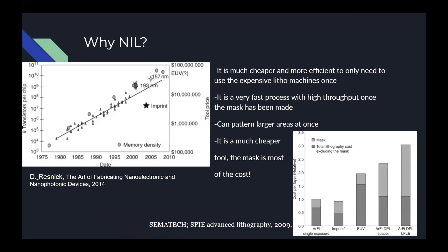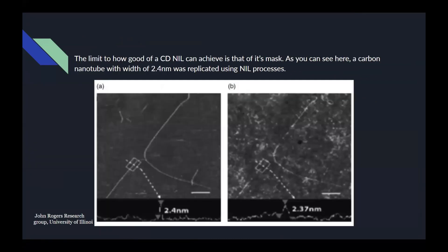As a brief aside, the sub-10 nanometer level is often thought of as the practical limit for nanoimprint. While this is somewhat true, the only real limitation of nanoimprint is the critical dimension of the mask you can make to be used for it.